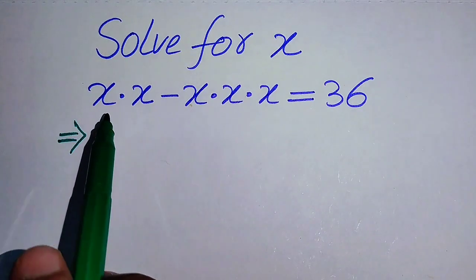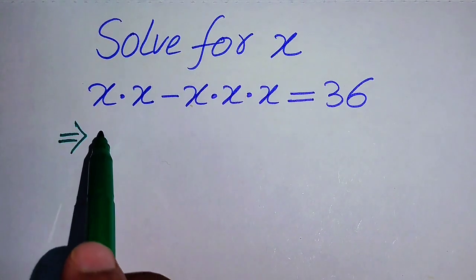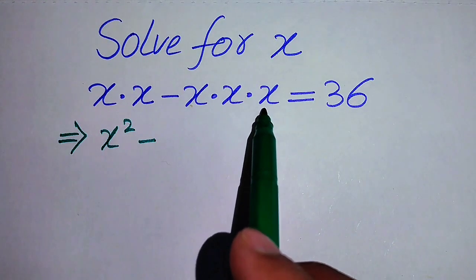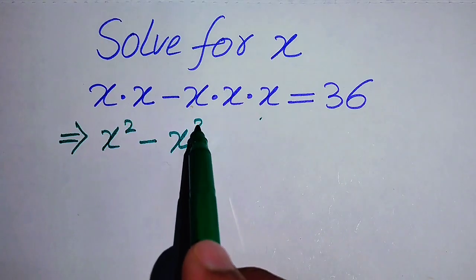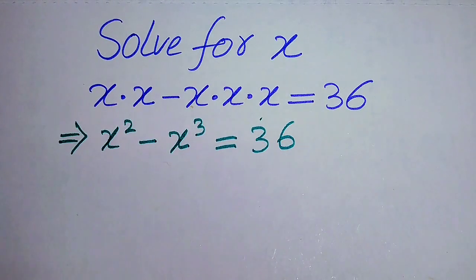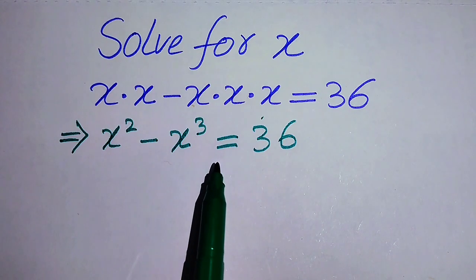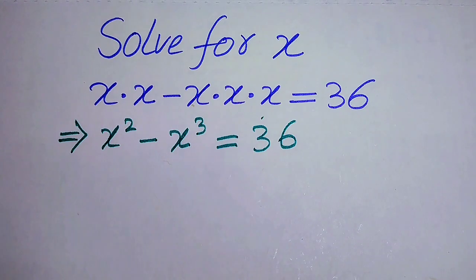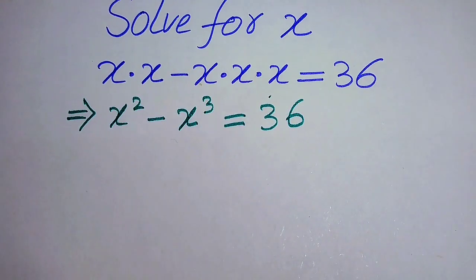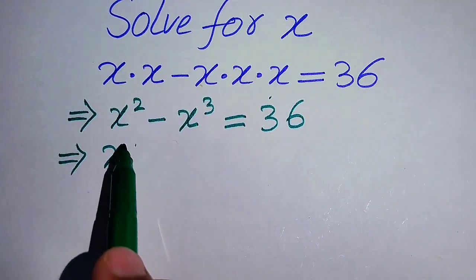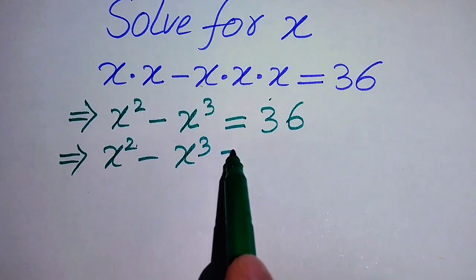The first thing we do: x multiplied by x is written as x squared, minus x multiplied by x three times, written as x cubed, equals 36. This equation becomes a cubic equation, which means it has 3 or fewer roots. We need to find all roots of the given equation. We rewrite this as x squared minus x cubed equals 36.